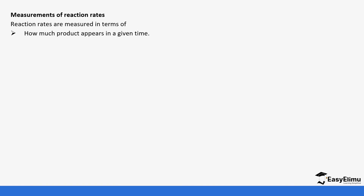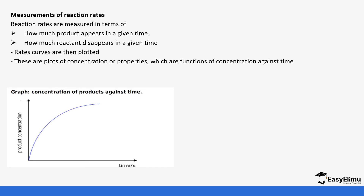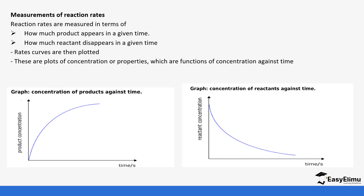We measure the rates of reaction in terms of how much the reactant disappears or how much product appears. For example, if you were to plot the curve of concentration against time, you'd have two curves. You can place them in the same graph or in different graphs — one curve for the reactant and one for the product.